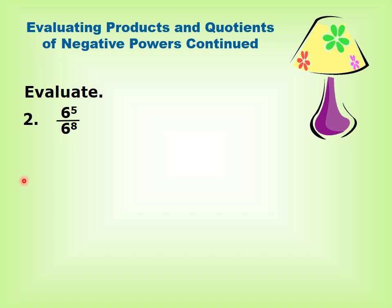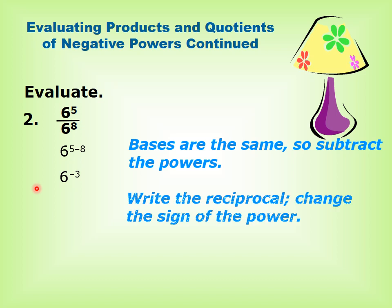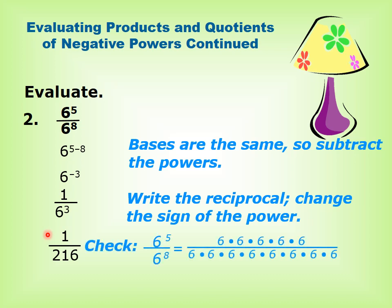Now for a quotient: 6 power 5 over 6 power 8. The bases are the same, so subtract the powers since we are dividing with the same base — the upper power minus the lower one: 6 power (5 minus 8) equals 6 power negative 3. Write the reciprocal and change the sign of the power: equals 1 over 6 power 3, equals 1 over 216.